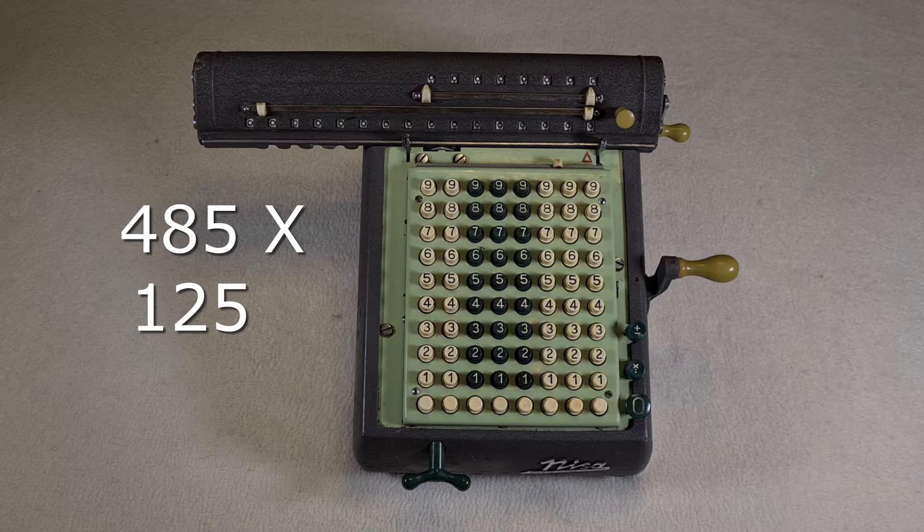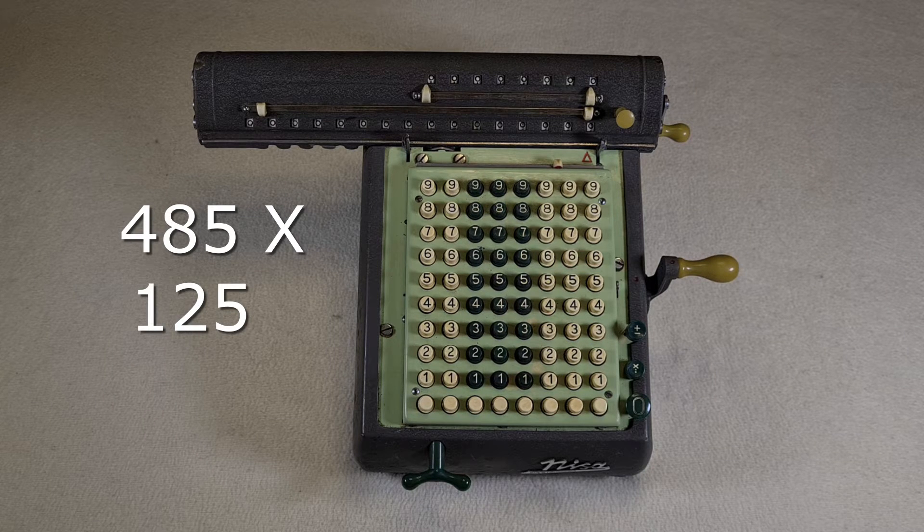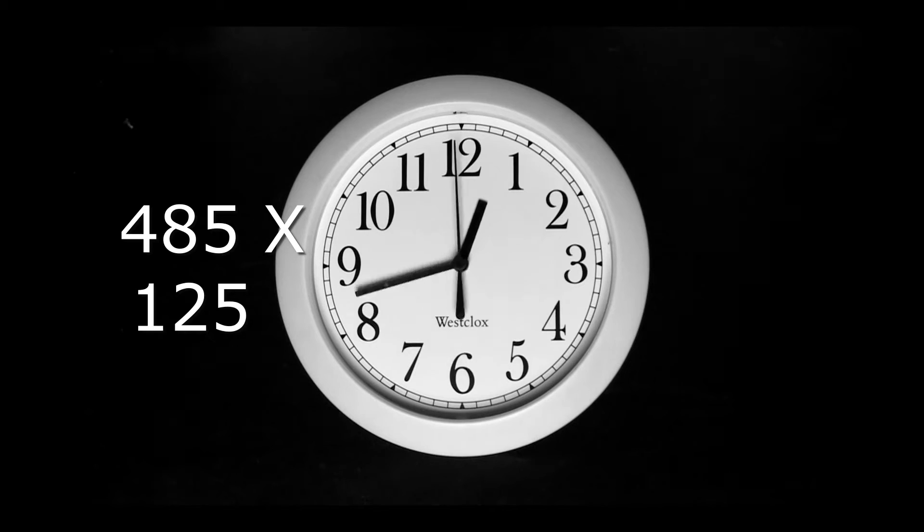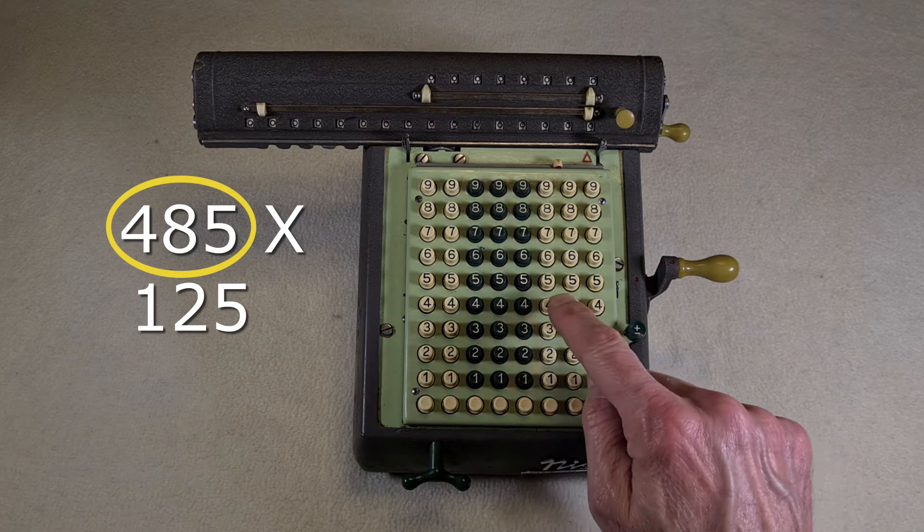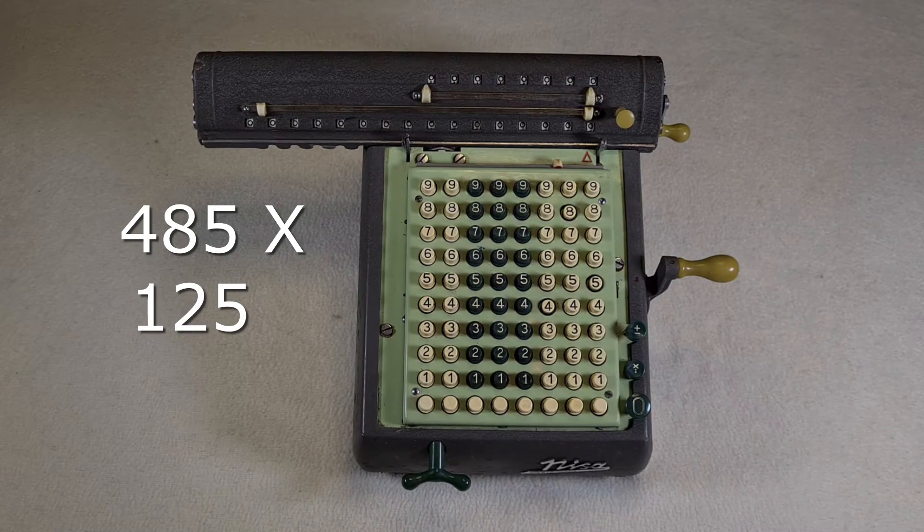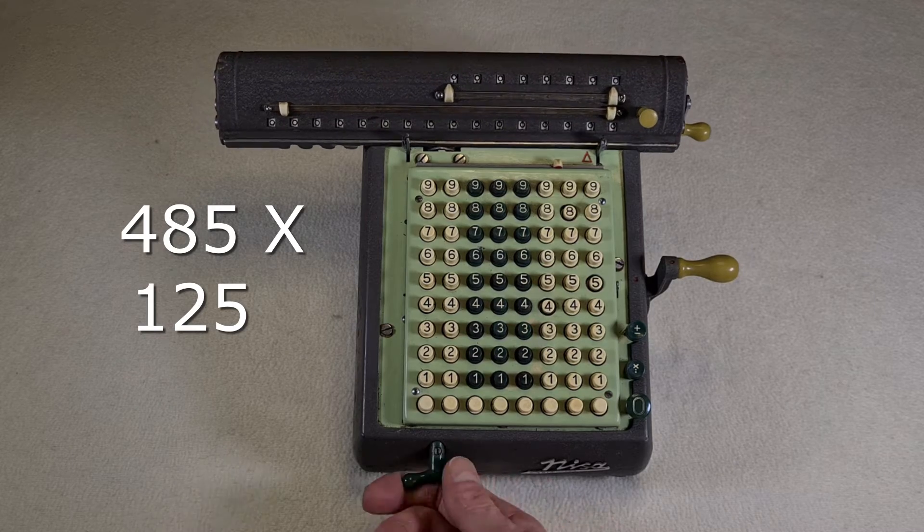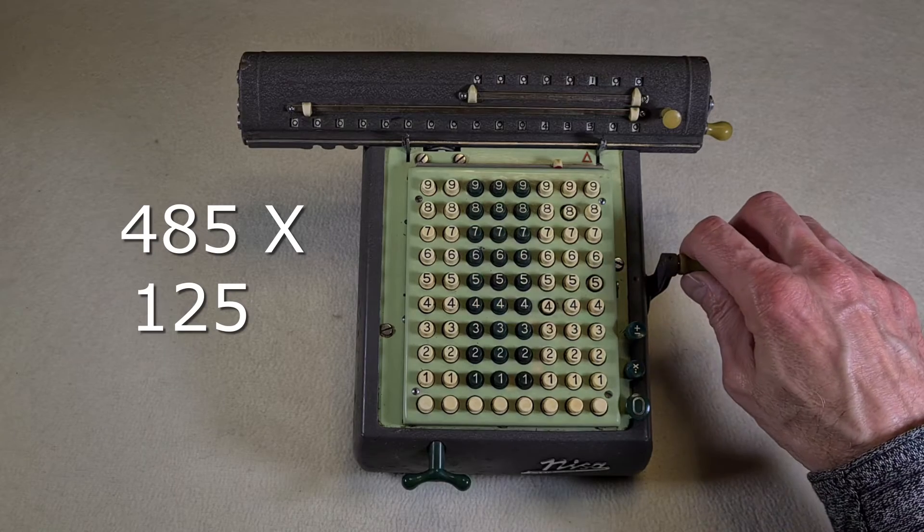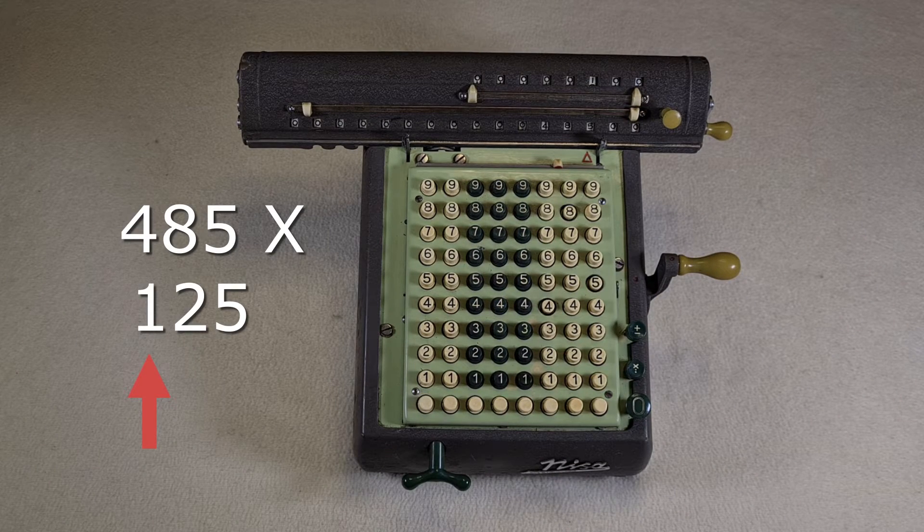If you have to multiply 485 by 125, it's not convenient to turn the crank 125 times. There is a simpler way. You write 485 in the keyboard. Then you use this handle to move the carriage to the hundreds position, and you turn the crank once, for the 1 in the number 125.